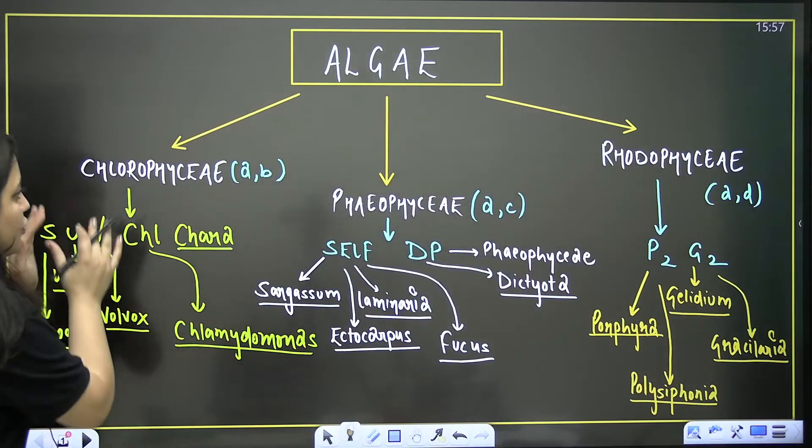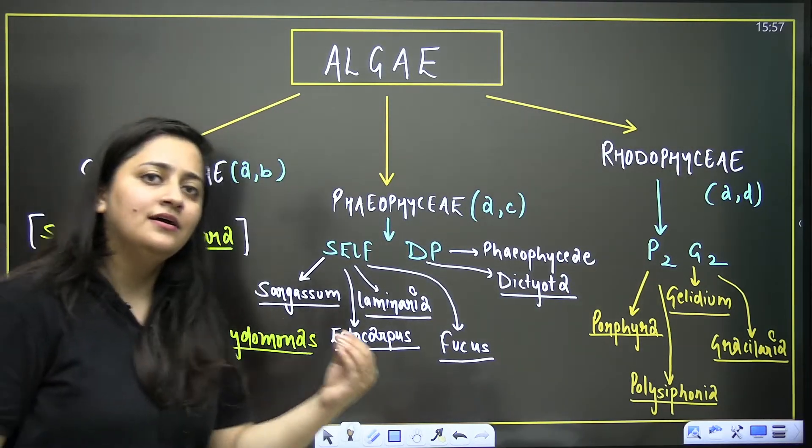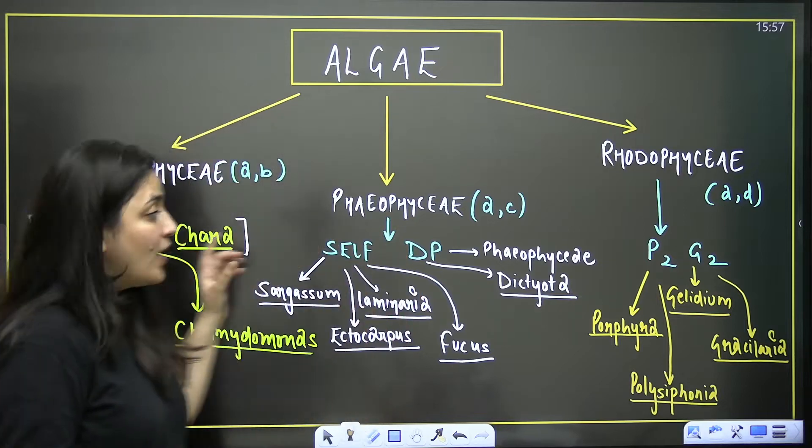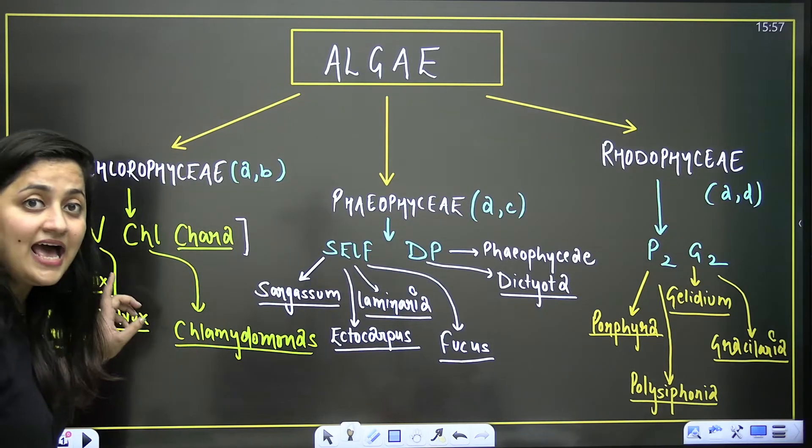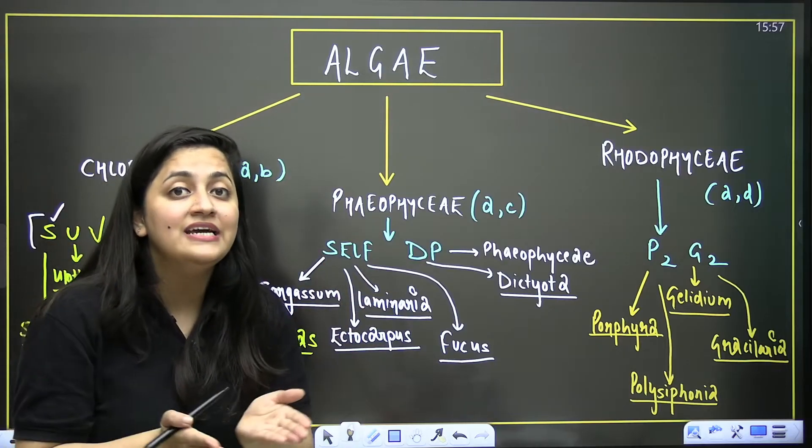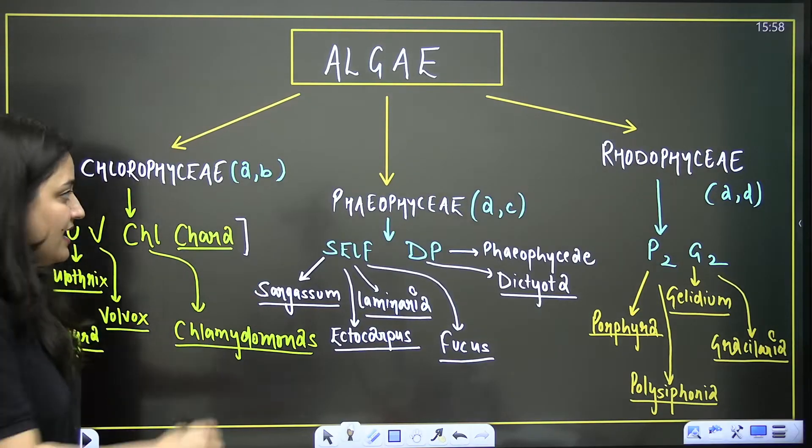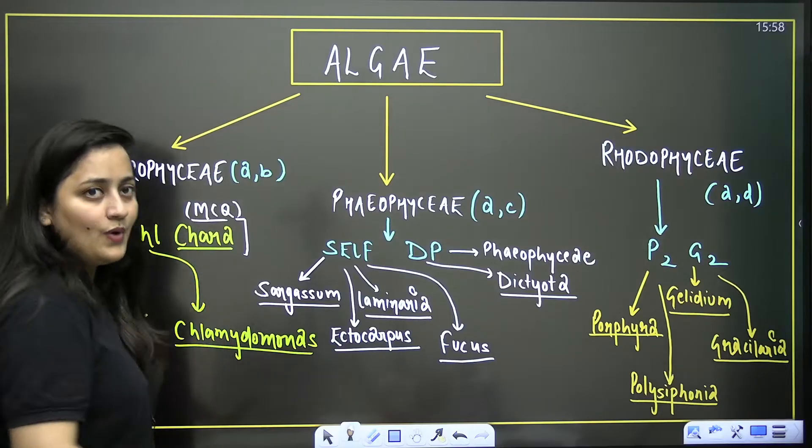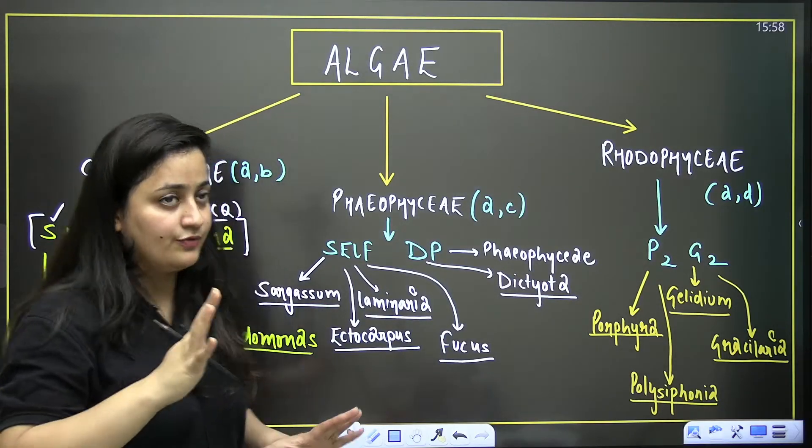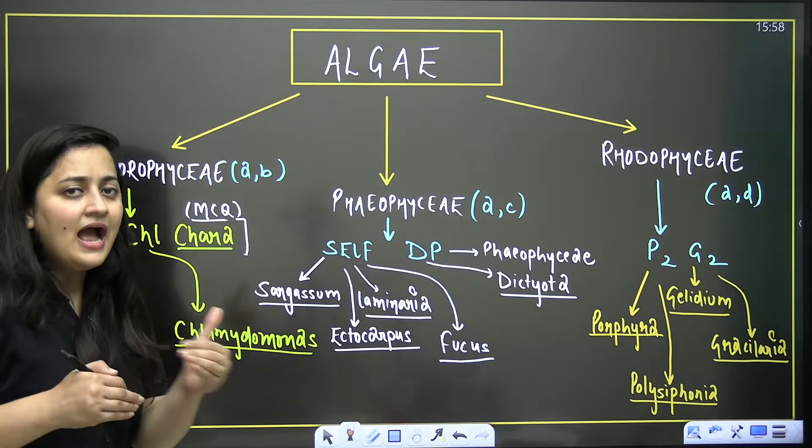When you talk about the tricks for class Chlorophyceae, it's SUV chal Cara. S stands for Spirogyra, the filamentous algae. U stands for Ulothrix, again filamentous algae. V stands for Volvox, colonial algae. Chl for Chlamydomonas, and Cara, the green algae. Many times questions come from Cara, from the diagram and from the position of the oogonium and antheridium.